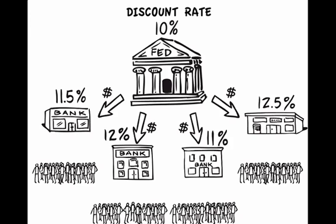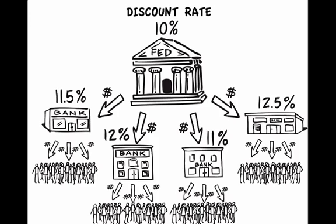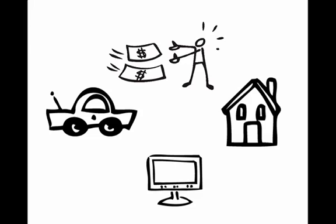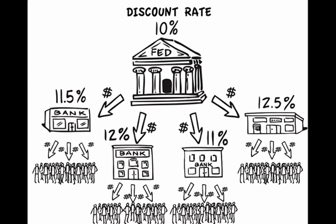To show an example of how it works, let's say that the Fed sets the discount rate at 10%. This means that all the banks are paying 10% to borrow the money from the Fed, adding a margin or the profit that they want to make, and lending it out to the people at their respective rates. The banks can charge whatever they please above the 10%, but it's in their best interest to offer a rate that will keep them competitive in the market. It's the people's responsibility to seek the best deal out there.